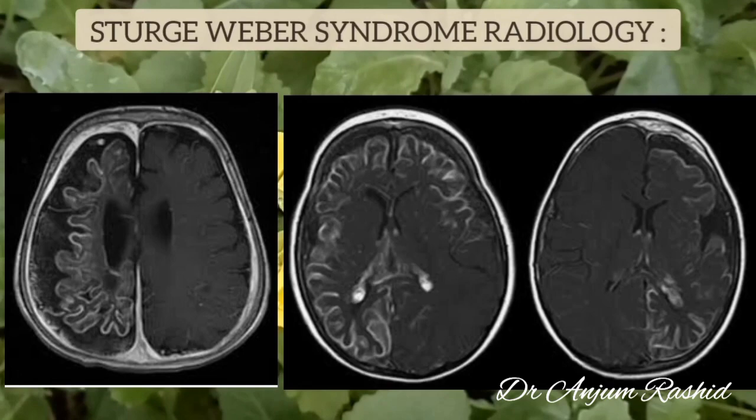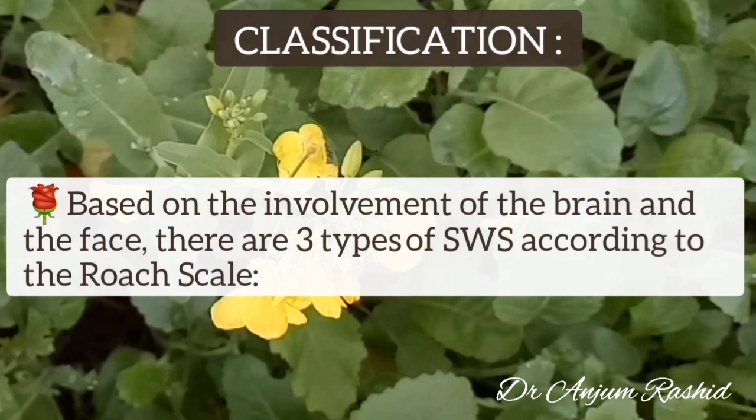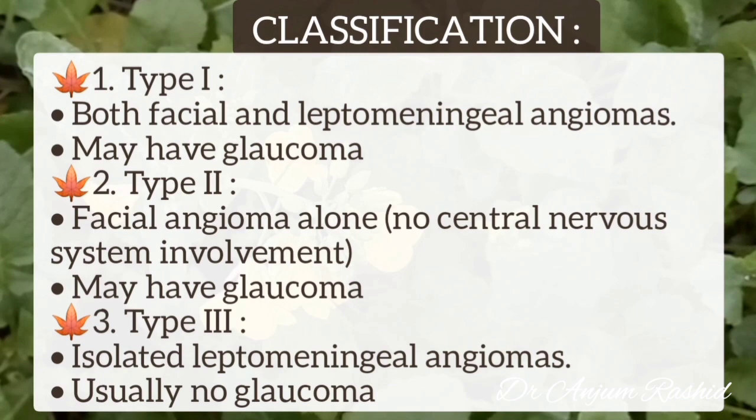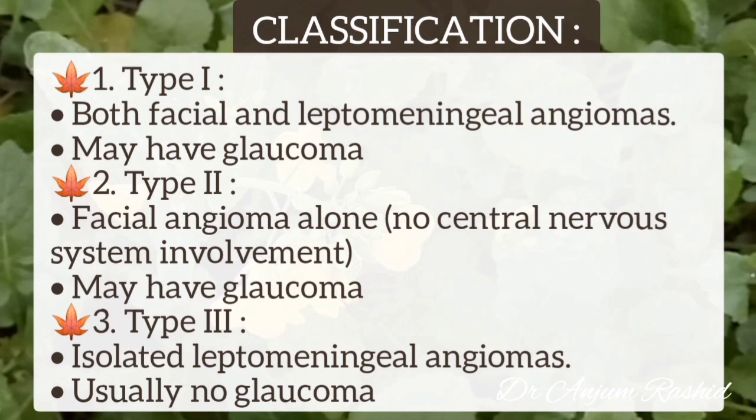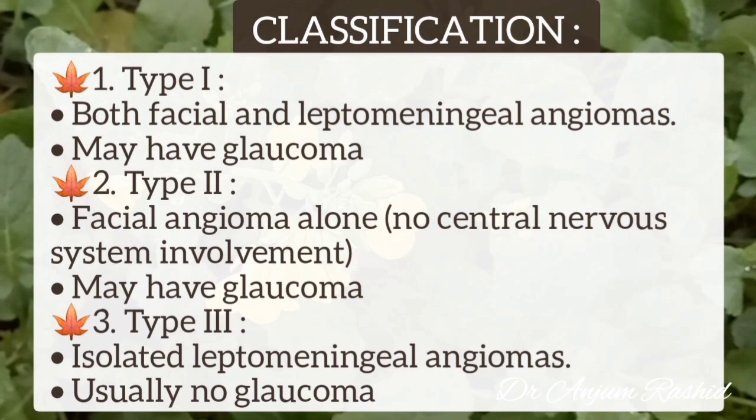Based on the involvement of the brain and the face, there are three types of Sturge-Weber syndrome according to the Roach scale. In type 1, both facial and leptomeningeal angiomas are present and the patient has glaucoma. In type 2, there is facial angioma alone with no central nervous system involvement and there is glaucoma. In type 3, there is isolated leptomeningeal angioma and there is usually no glaucoma.